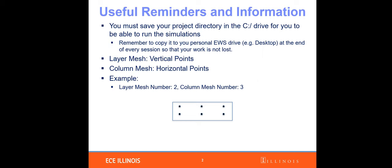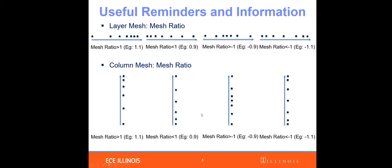The second reminder is about layer mesh and column mesh. Layer mesh means how many vertical points you are sampling along the layer direction, which is the Y-axis. Column mesh is the number of sampling points in the horizontal direction, the X-axis. So if I set my layer mesh to two, I have two points in the Y-direction. If I set my column mesh to three, I have three points in the X-direction.